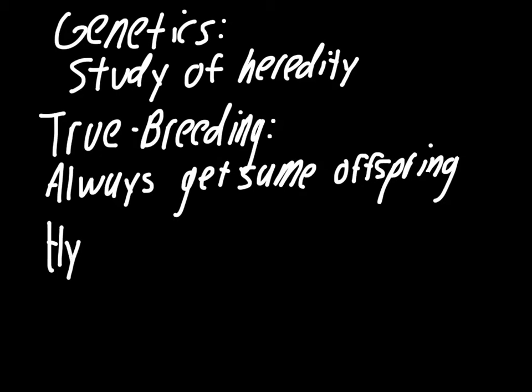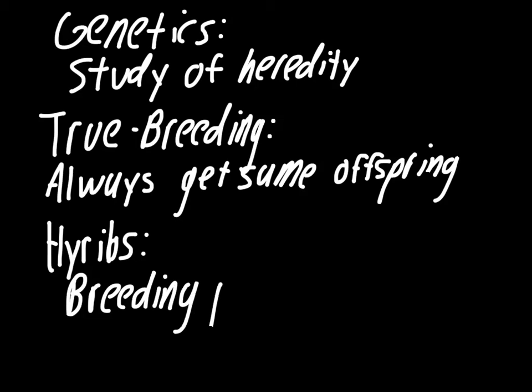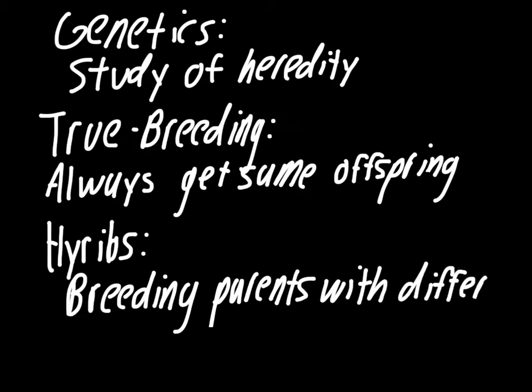The next one, which is different than true breeding, are hybrids. In this case, it's breeding parents with different traits. So this would be like taking one of the tall pea plants and then one of the small pea plants and then breeding them together.